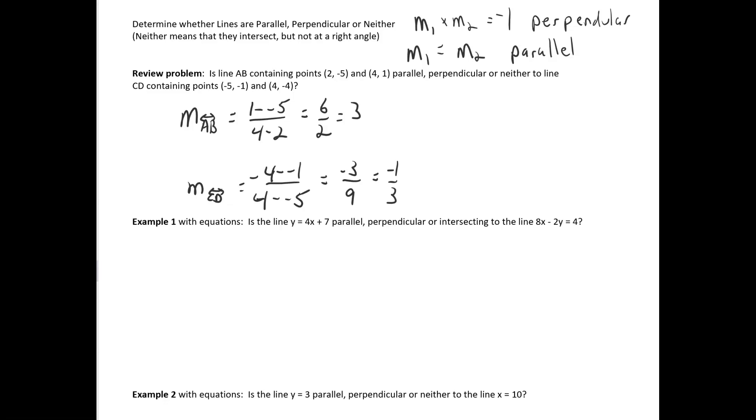Now, looking at our two slopes, first of all, they are negative reciprocals of each other, so that's one way of telling that they're perpendicular. The other way is just to do the test that I showed you and just multiply them. 3 times negative 1 third equals negative 1, so these are perpendicular.